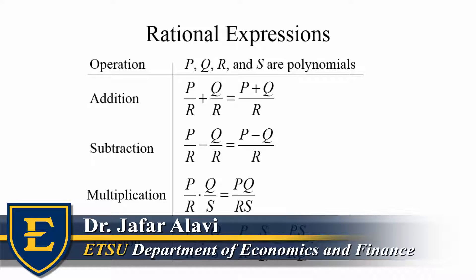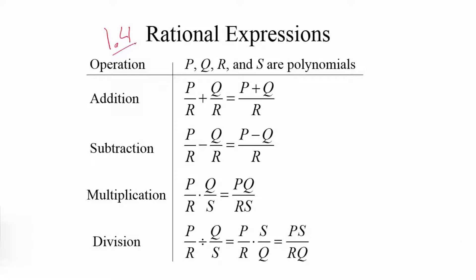We're going to continue with section 1.4, called rational expressions. Here we talk about different laws pertaining to addition, subtraction, multiplication, and division of rational expressions. A rational expression has a numerator and a denominator, where both the numerator and denominator are polynomials.